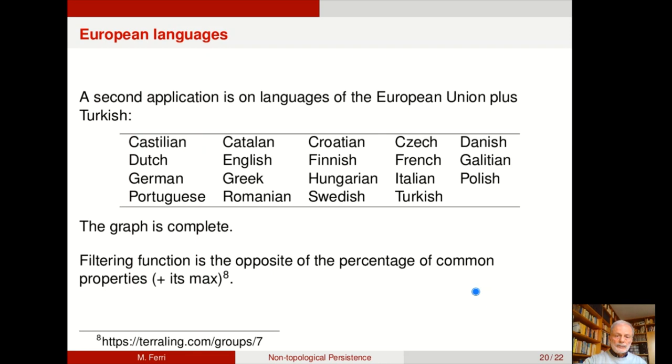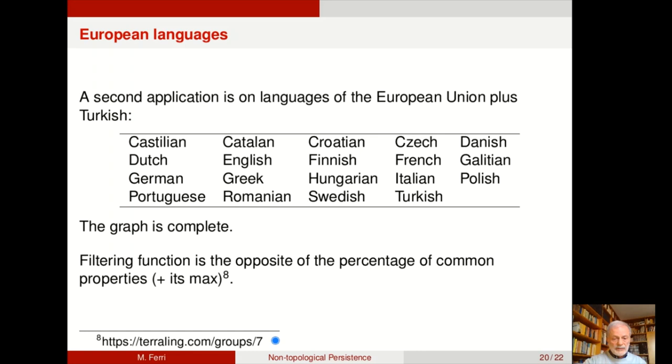A second application is with the languages of the European Union plus Turkish as vertices, complete graph, filtering function, the opposite of the percentage of common properties found in this very interesting site. We get various persistence diagrams. One is this with ranging hubs and we find in this case just six corner points. The lower ones are Swedish, Castilian, Catalan and Dutch. And above the widest diagonal gap we find English and Portuguese. We do not claim that this has a particular meaning. We just have wanted to perform some first experiments.